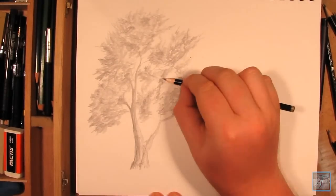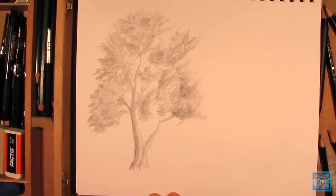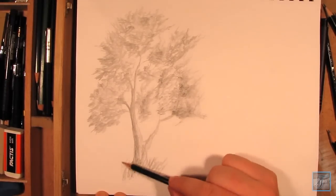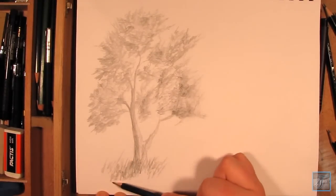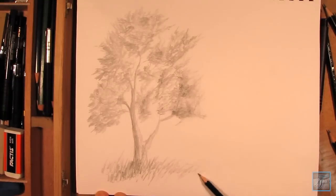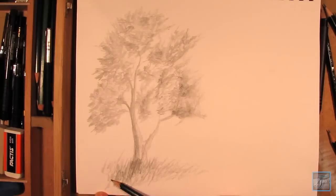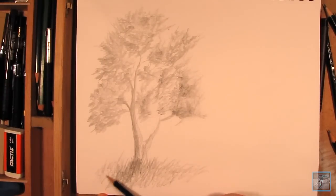One last tip I can give for drawing a tree is to make a foundation for it. In this case I just went simple and I just want to put some grass in. Adding a foundation kind of plants the tree, if you will—it just helps to really make it look like it's interacting with the environment.